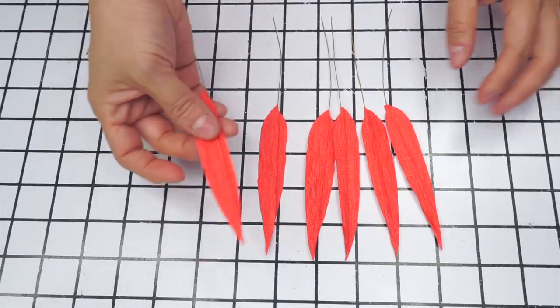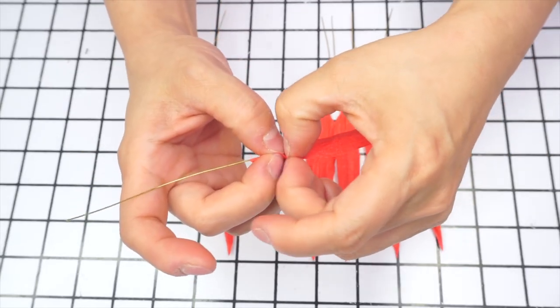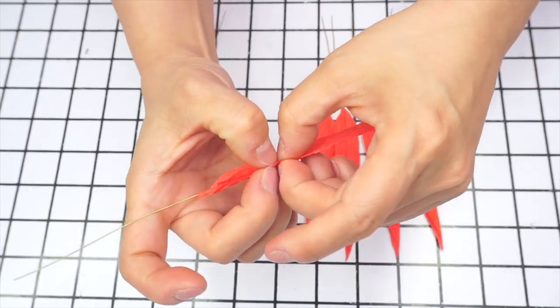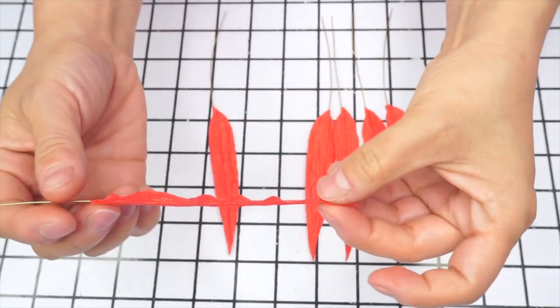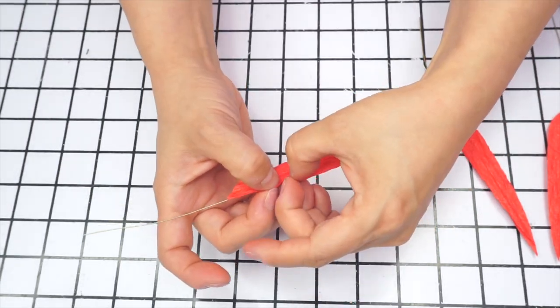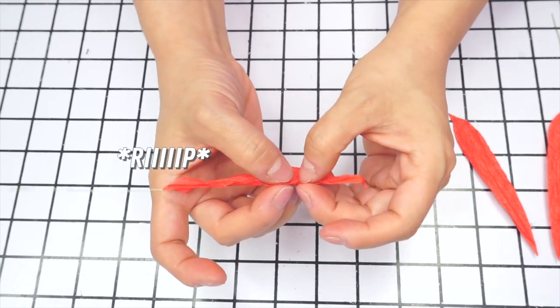This next step is tricky but important. Scrape along the edge of the petal with your fingernails to create waves. Scrape back and forth with a little pressure and go down both sides. This will instantly make your petals look more organic and real. I suggest practicing this delicate task on paper scraps until you get the gist of it. Don't apply too much pressure or the paper can rip.